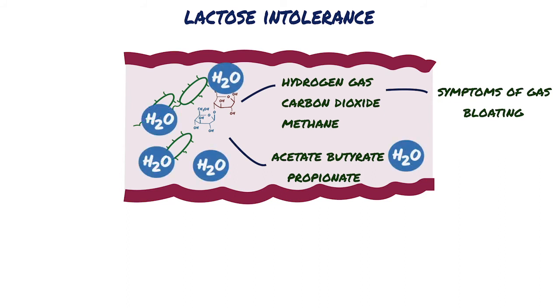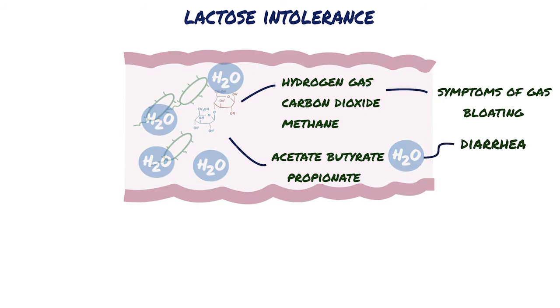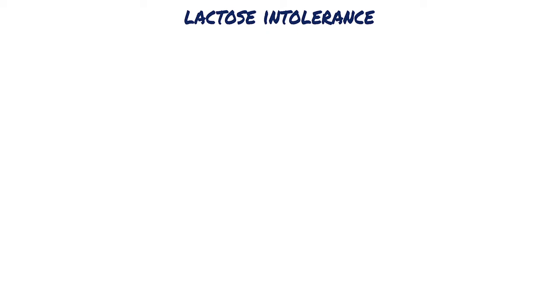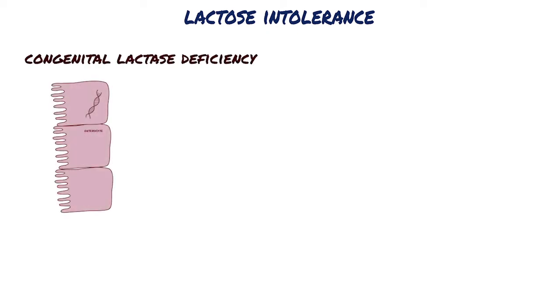So water flows in and this influx of water is what leads to diarrhea. There are two types of lactase deficiency. First one is congenital lactase deficiency, caused by a mutation in the gene encoding lactase, which is an autosomal recessive disorder.